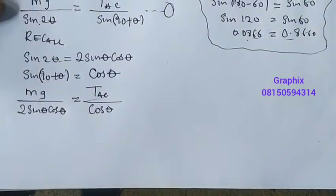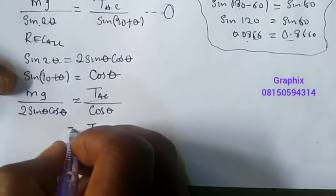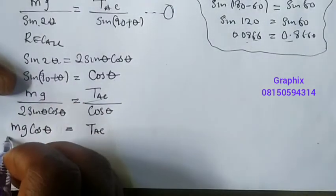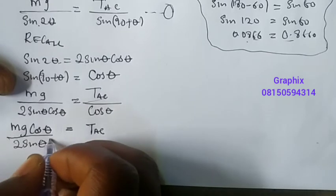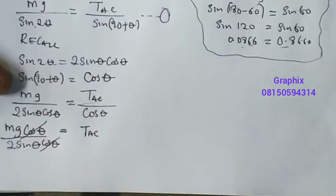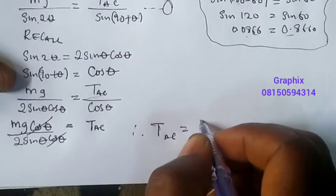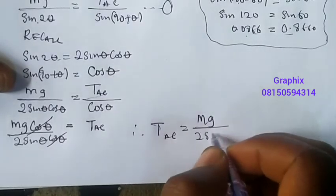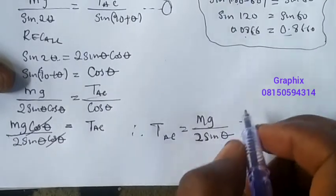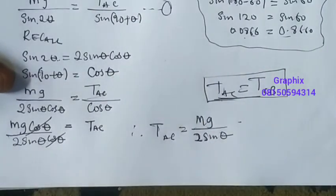Cross-multiplying: T_AC equals mg times cos(theta) over 2 sine(theta) cos(theta). The cos(theta) cancels, so therefore T_AC equals mg over 2 sine(theta). That is the answer. You should also know that T_AC equals T_CB because the angles are equal, so both tensions have the same value. Thank you very much for watching.